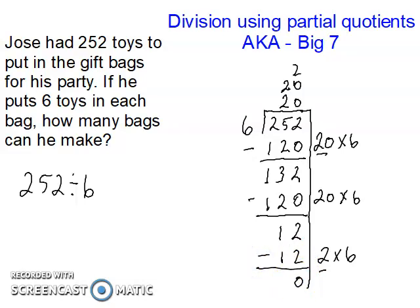So then I'm going to take my partial quotients up here and add them together. 20 bags, another 20 bags, and then 2 bags, that gives me 42. So I'm going to put 42 right here for my answer.